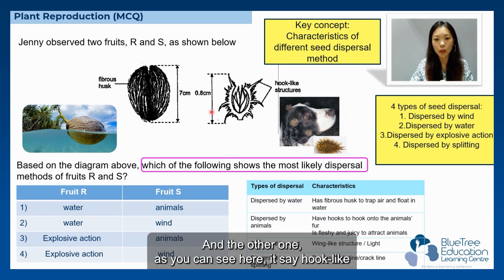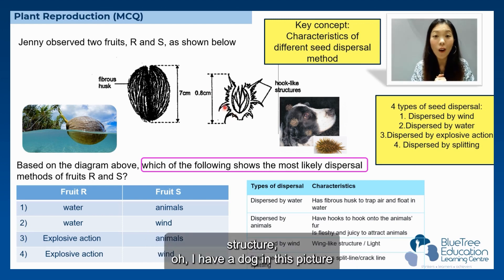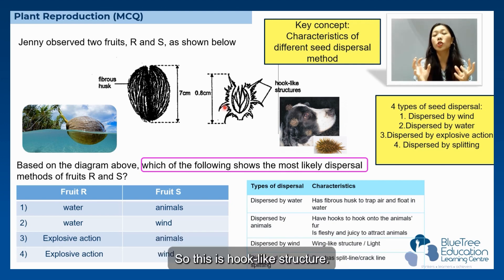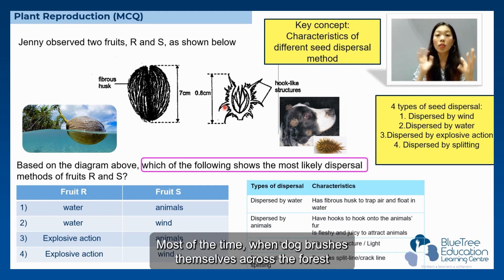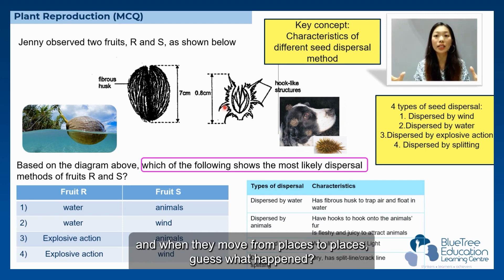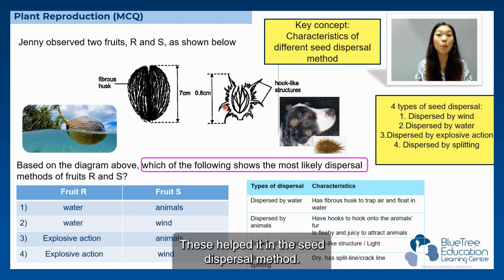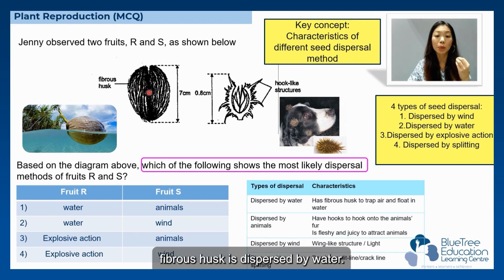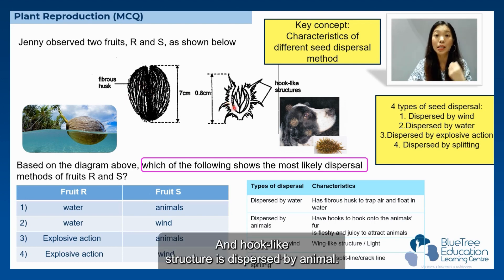The other picture shows a hook-like structure. I have a dog in this picture, and these are little burdock seeds sticking onto the dog. When a dog brushes through the forest and runs across seeds with hooks, those hooks latch onto its fur. As the dog moves from place to place, this helps in the seed dispersal method. So the answer tells us that a fibrous husk means dispersal by water, and a hook-like structure means dispersal by animal.